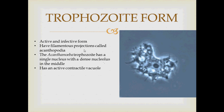The trophozoite form is the active and infective form of Acanthamoeba. They have filamentous projections known as acanthopodia, which are tooth-like pseudopodia used for movement. The Acanthamoeba trophozoite has a single nucleus with a dense nucleolus in the center.